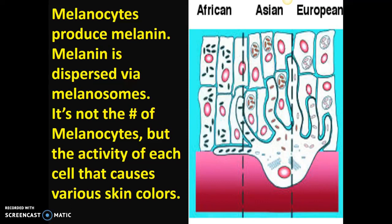Melanocytes produce melanin, and the three different main groups of humans according to their melanin production are African descent, Asian descent, and European descent. You can see that European descent produces fewer melanocytes, probably because they had less exposure to the sun over all the years.